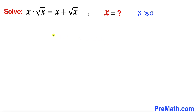Welcome to pre-math. In this video we are going to solve this given equation that involves radicals: x times square root of x equals x plus square root of x. We are going to solve for x values, and keep in mind that x is greater than or equal to 0.